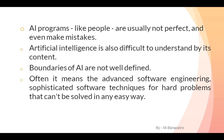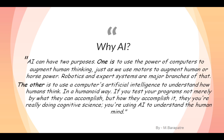Just as people are not perfect and make mistakes, AI programs are also not perfect — they also have some mistakes and minor defects. Artificial Intelligence is also difficult to understand because its boundaries are not well defined. It often means advanced software engineering and sophisticated software techniques for hard problems that cannot be solved easily. AI can serve two purposes: one is to use a powerful computer to augment human thinking.